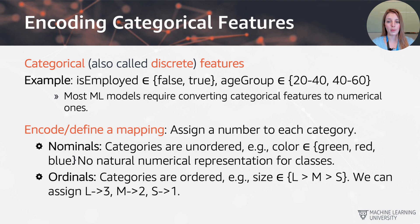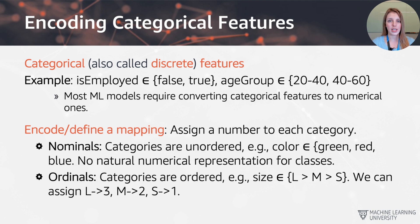The initial idea is to just assign numbers to categories, but depending on the type of categorical feature, this may not work. We need to distinguish between nominals and ordinals. For ordinals — categories that are intrinsically ordered, such as sizes from small to large — we can assign numbers from small to large. However, for nominals — unordered categories such as colors green, red, blue — there is no natural numerical representation, so we perform one-hot encoding, where each color gets its own column and we indicate with ones and zeros whether that color is present.